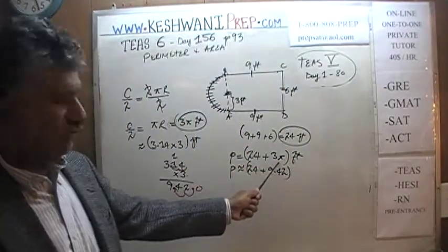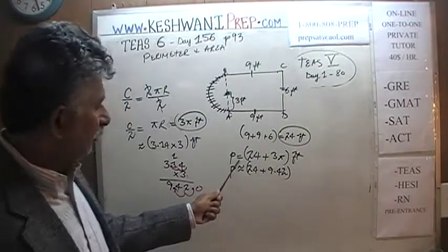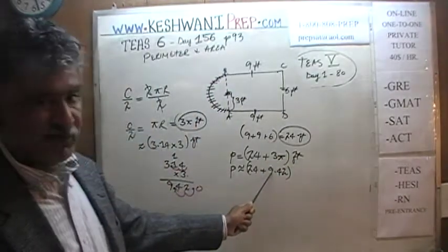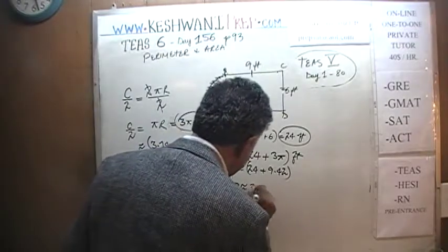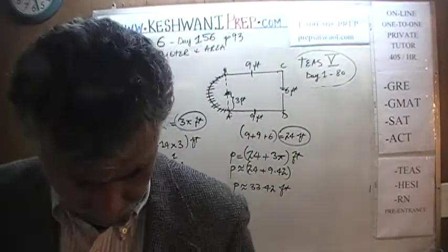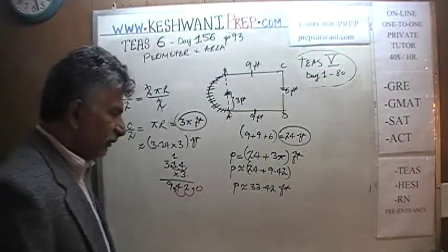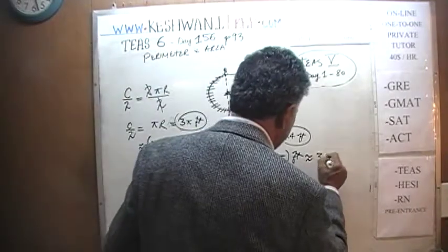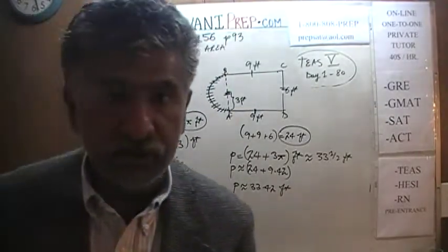This is the approximate perimeter because we substituted pi as 3.14, which is not the exact value, so we switch from equals to approximately equal. 24 plus 9.42: 24 plus 10 would have been 34, so it's 33 point something — the perimeter is approximately 33.42 feet, or we can say approximately 33.5 feet. Pick the answer choice that comes closest to 33.5 feet.